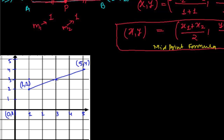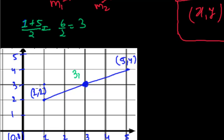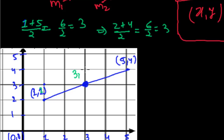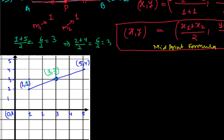The midpoint will be roughly here. Since it's the average, the average of the x-coordinates 1 and 5 is: (1 + 5) / 2 = 6 / 2 = 3. So the x-coordinate is 3. Again, the average of the y-coordinates 2 and 4 is: (2 + 4) / 2 = 6 / 2 = 3. So the y-coordinate is also 3. The midpoint is at (3, 3).